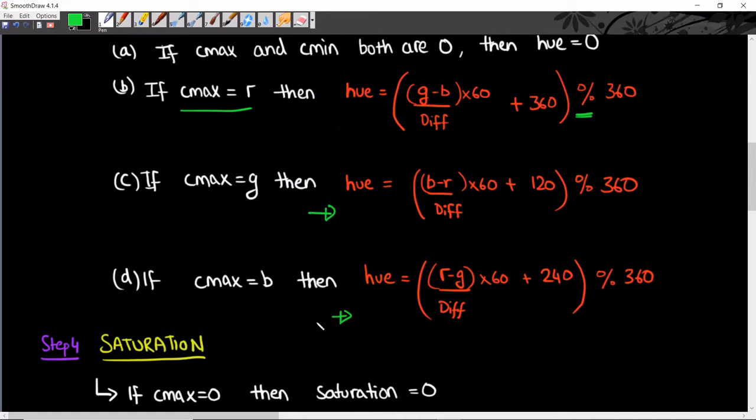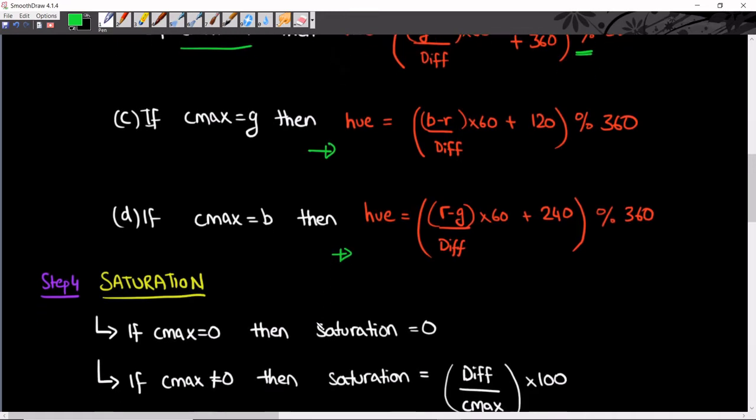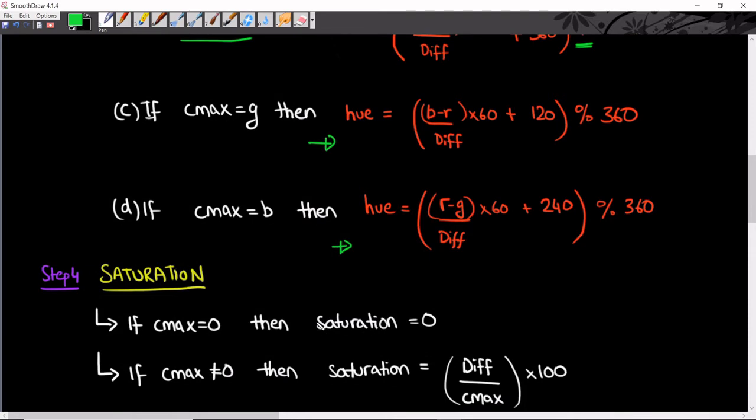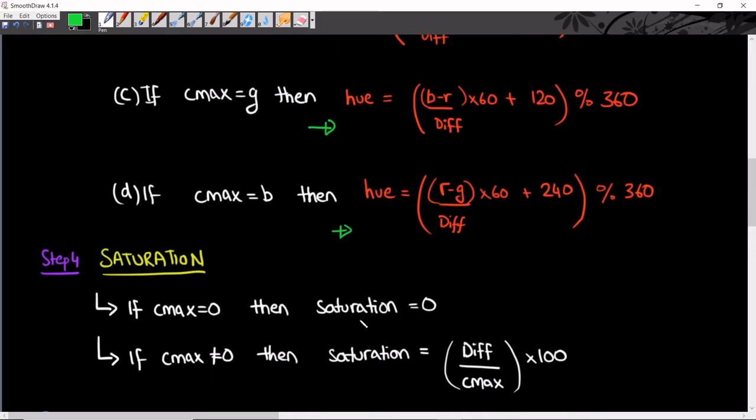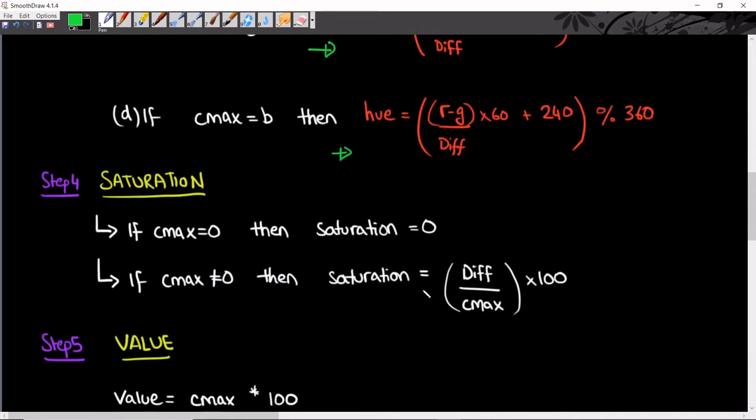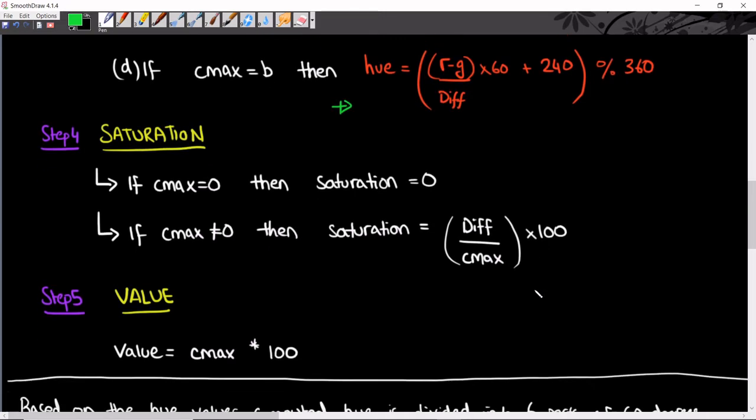Using this formula, you calculate your hue. Next up, we find saturation. If C max is 0, then saturation is 0. If C max is not equal to 0, then saturation is given by: difference divided by C max, multiplied by 100.